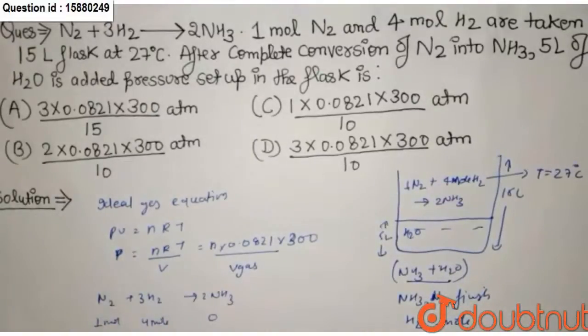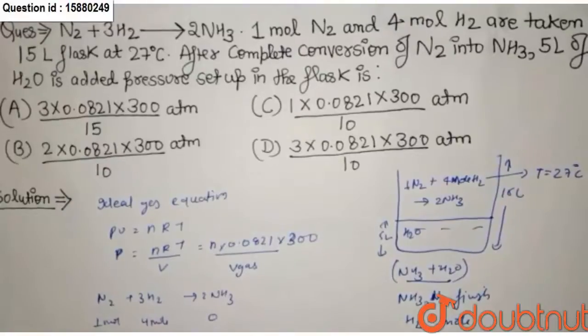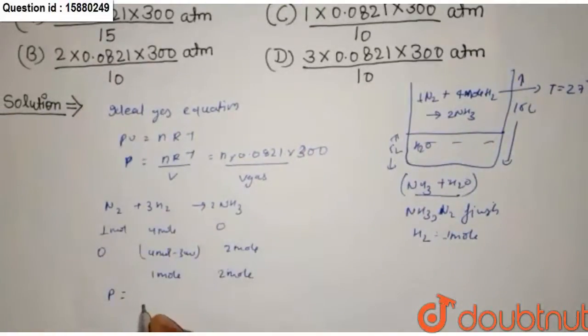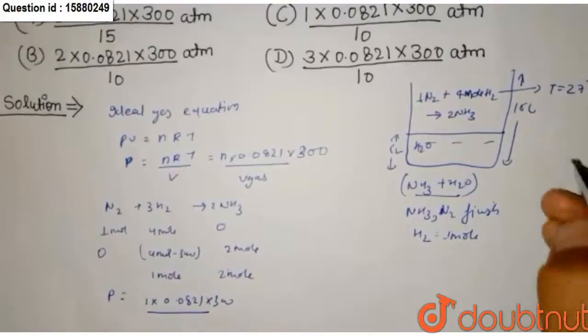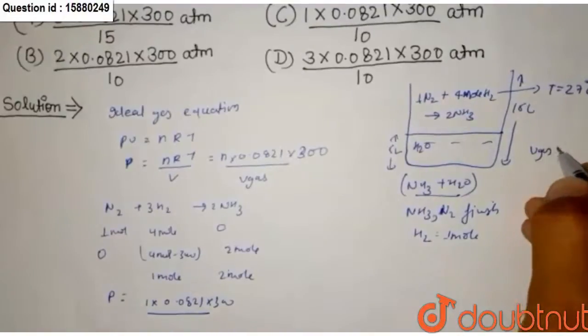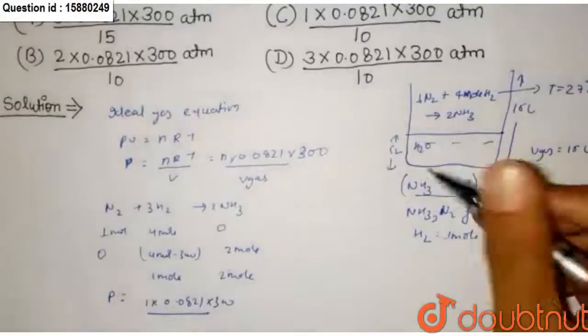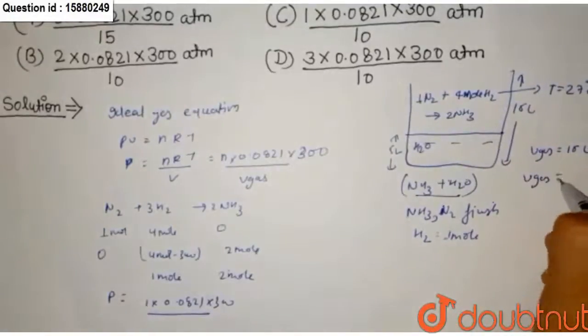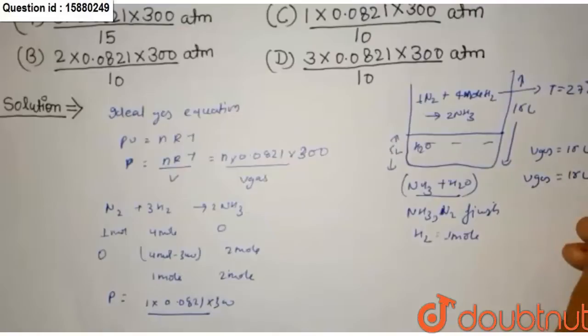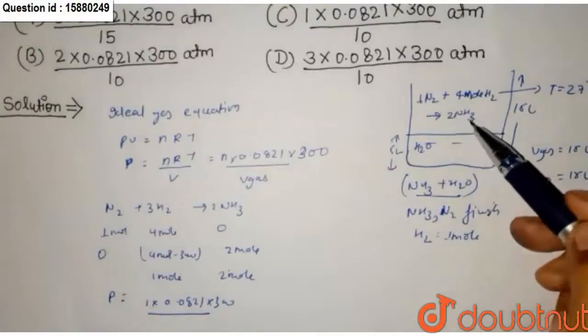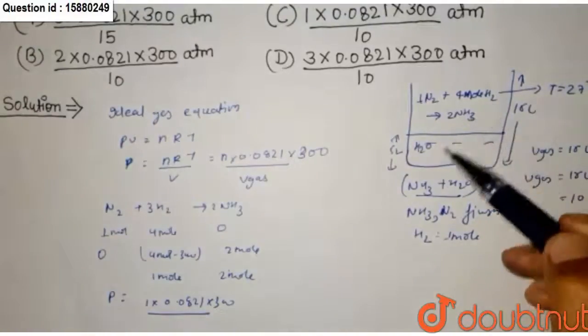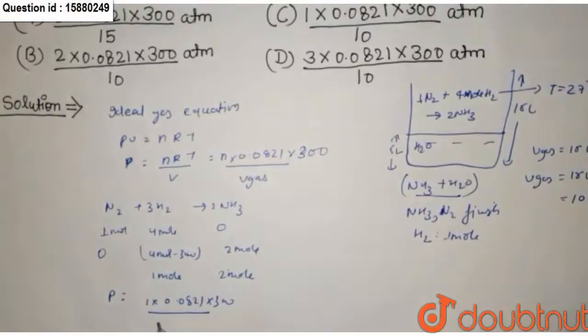N value, 1 into 0.0821 into 300, volume of gas initial flask volume of gas 15L. 5L H2O used, gas volume of gas 10L. Volume of gas occupied flask gas, H2O pressure exert volume 10.